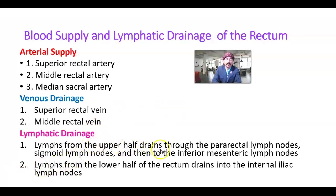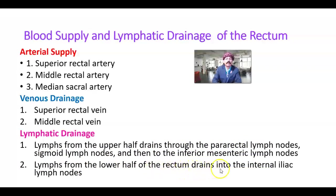Lymphatic drainage: lymph from the upper half of the rectum drains through pararectal lymph nodes, then sigmoid lymph nodes, then to the inferior mesenteric lymph nodes. Lymph from the lower half of the rectum mostly drains into the internal iliac lymph nodes.